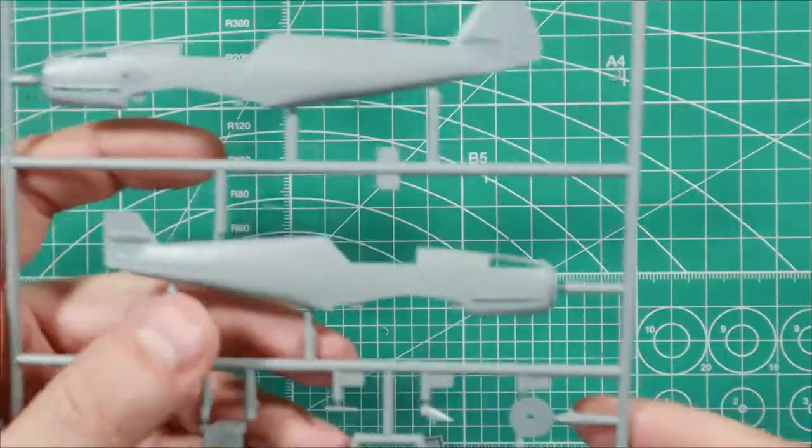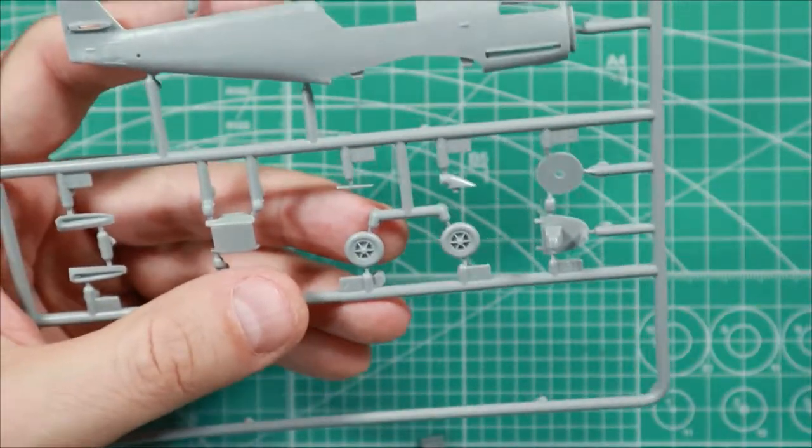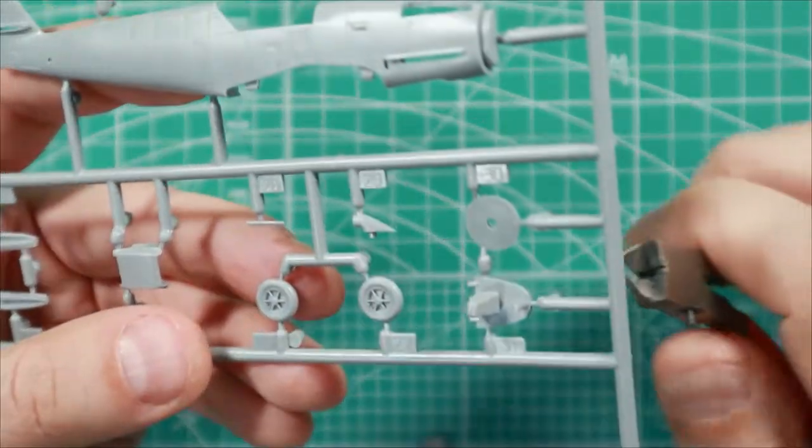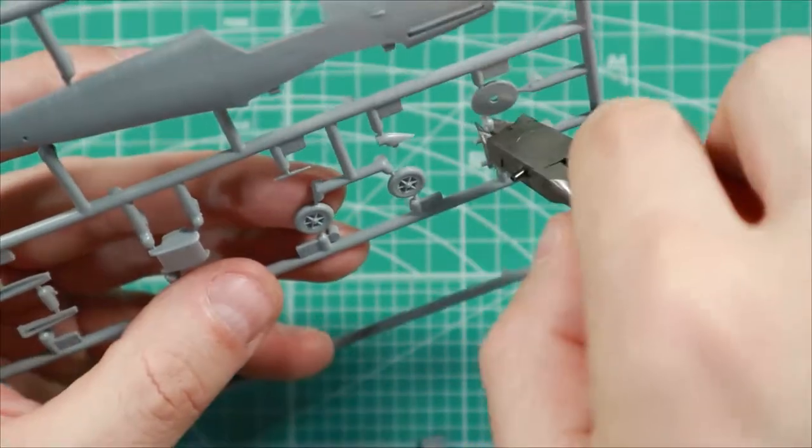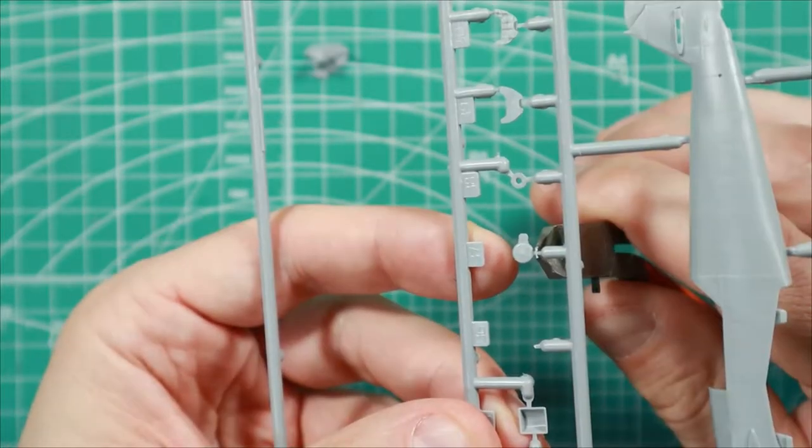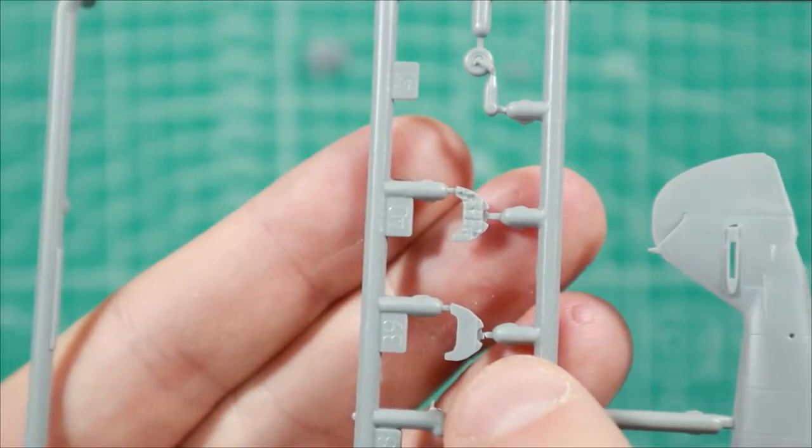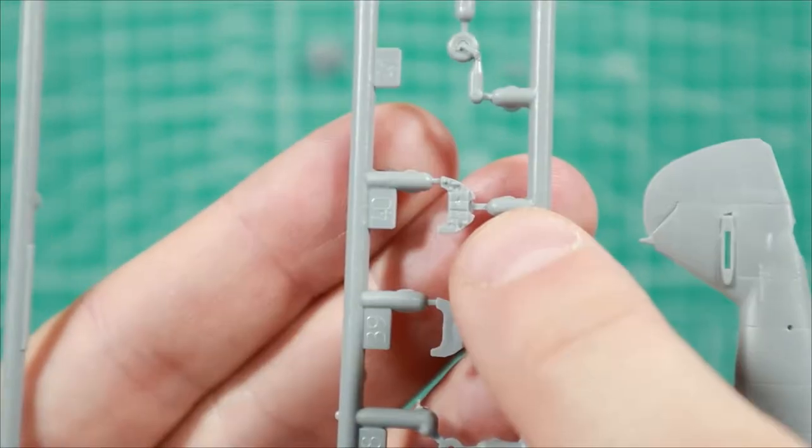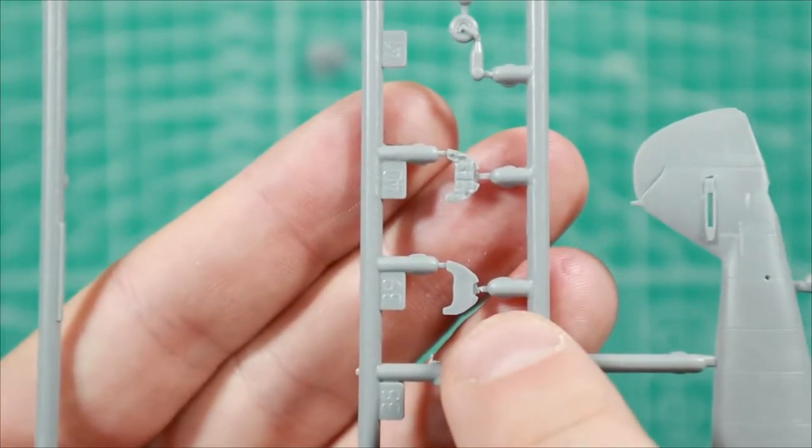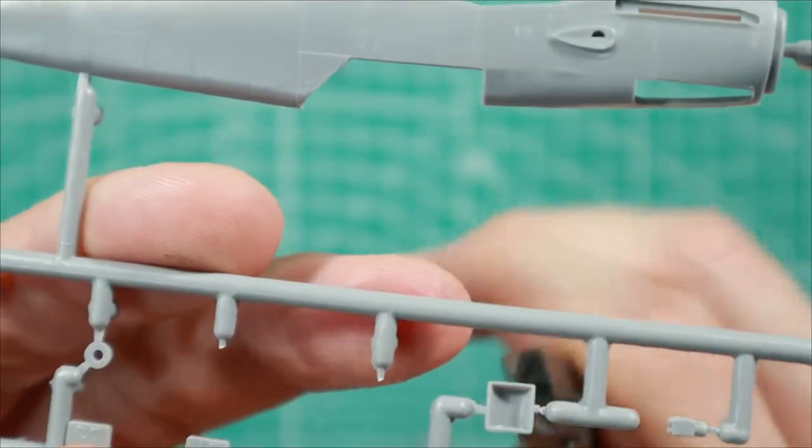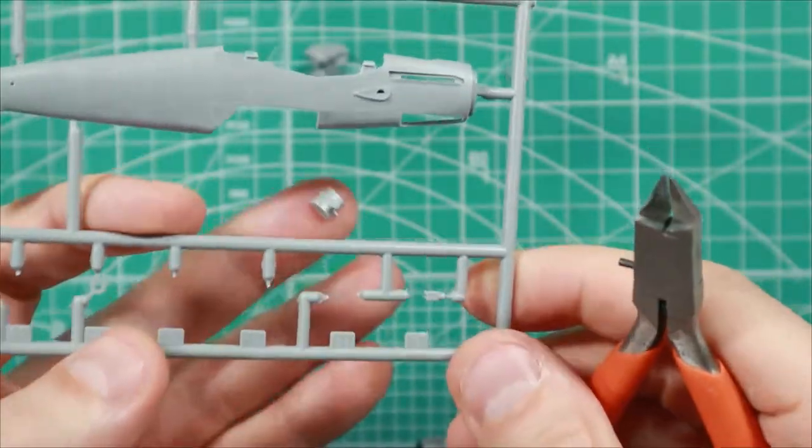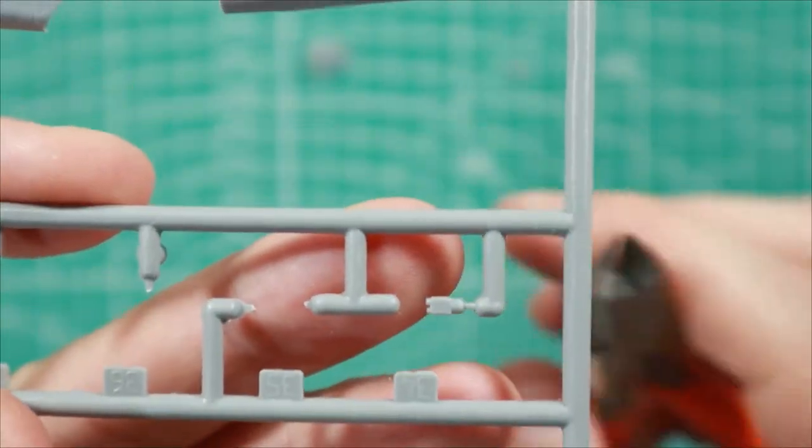For this we need this sprue that contains all these elements. You can see we're using one that has just a flat surface and not the instruments because we're going to be putting a decal here. And I do believe this is some sort of radio.